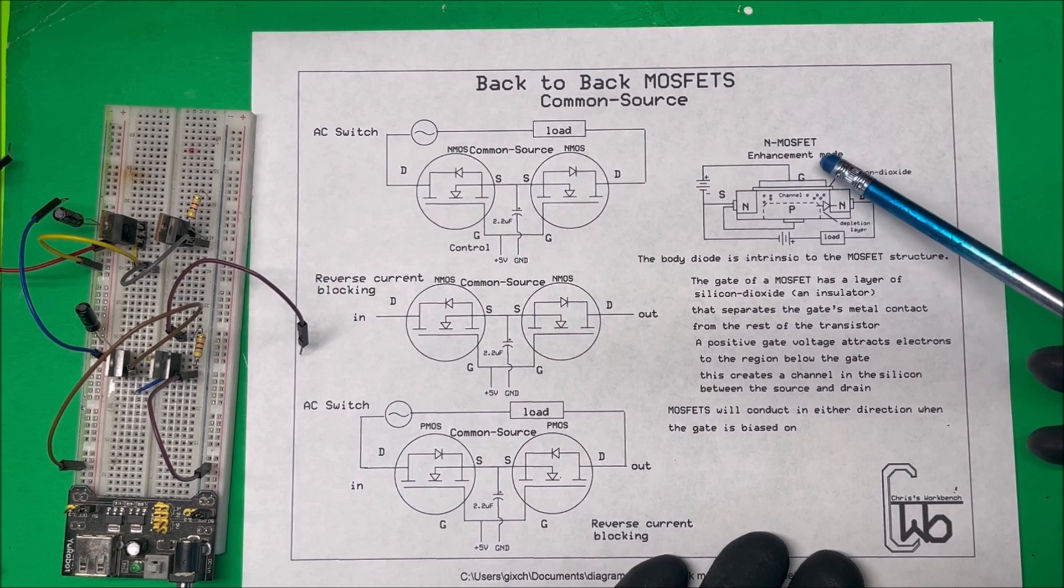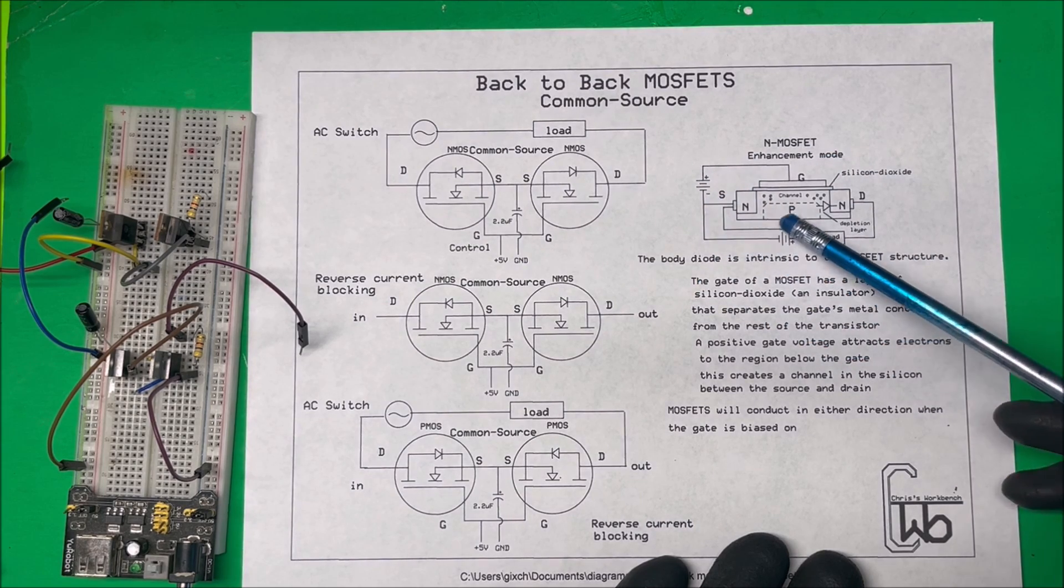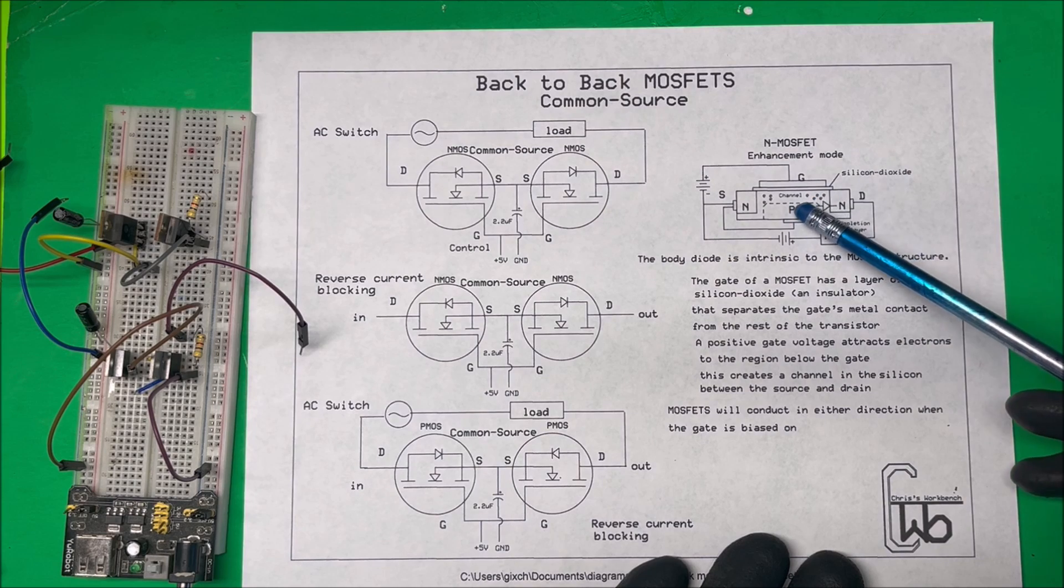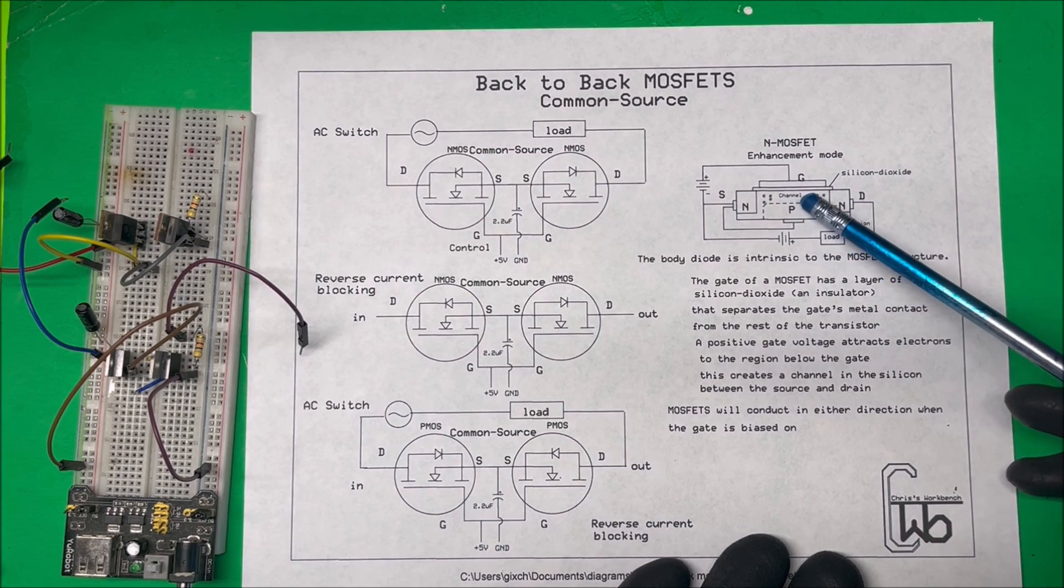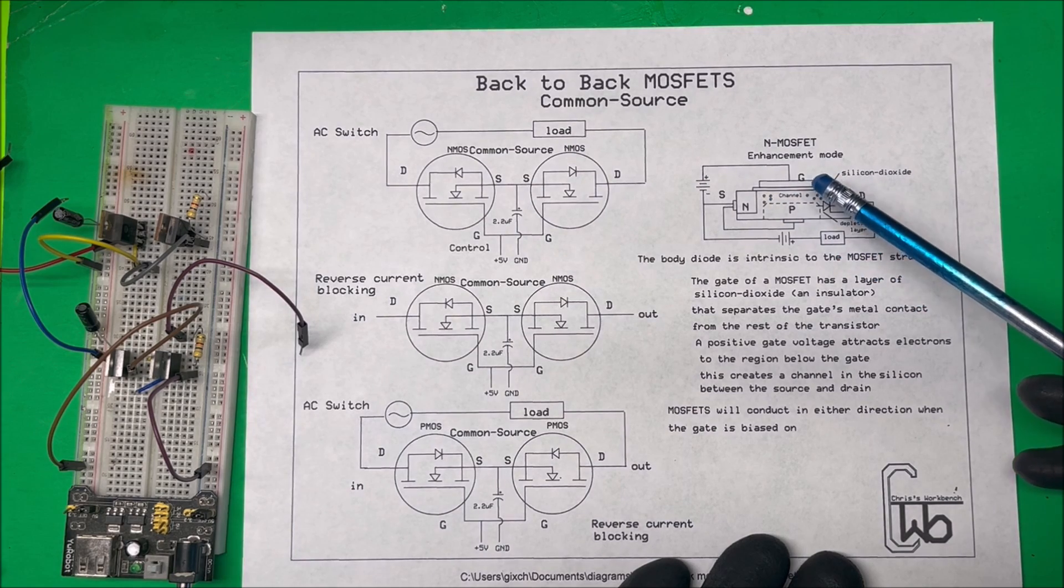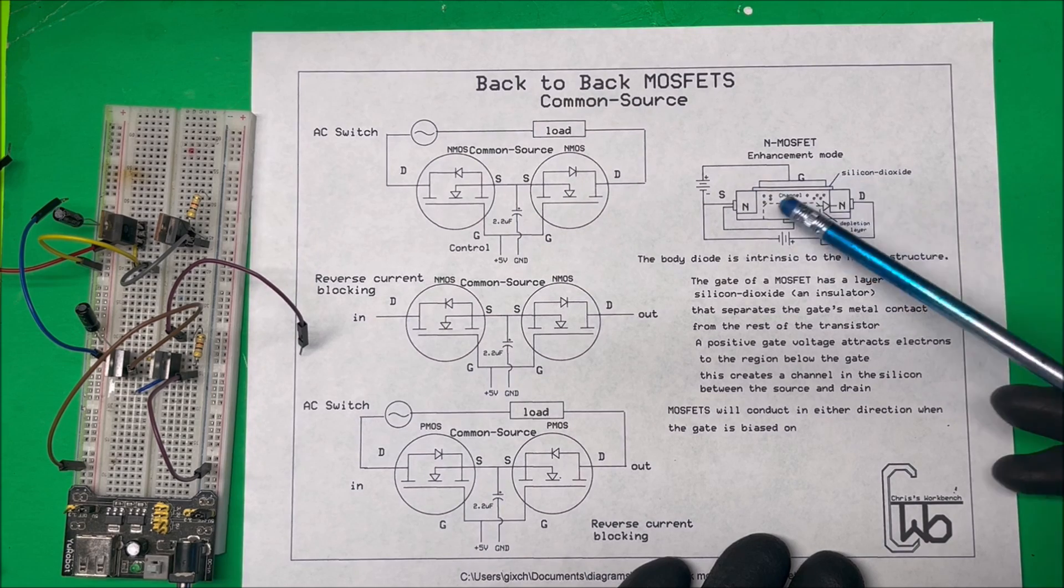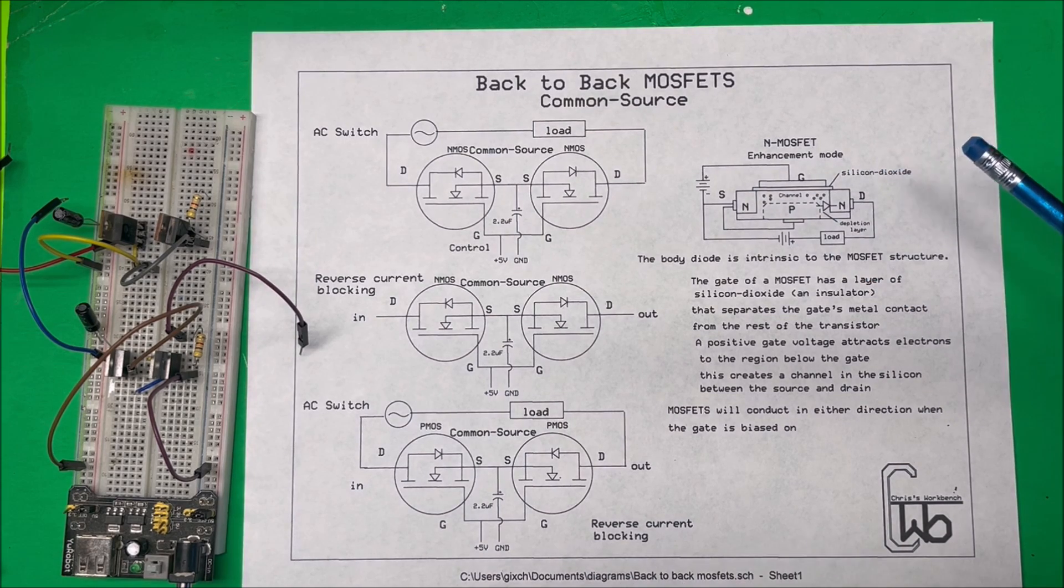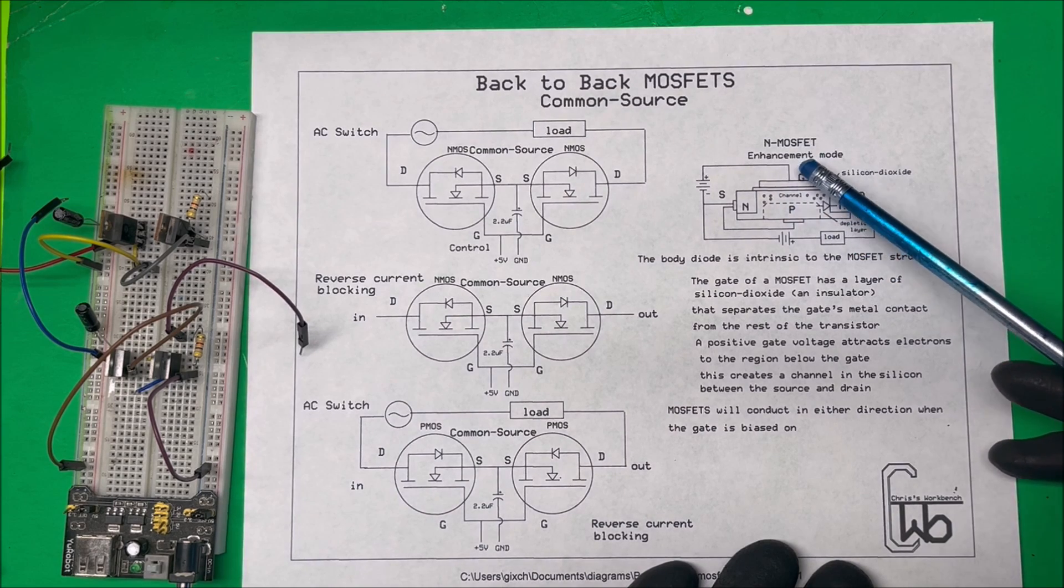So we take the negative to the source down here, and the source is internally tied to the p-material inside the MOSFET itself. This becomes negative and positive, and electrons can flow into this region up here. This creates a channel in the silicon between the source and the drain, and the unit turns on. In order to turn it off, we have to take this gate to ground.